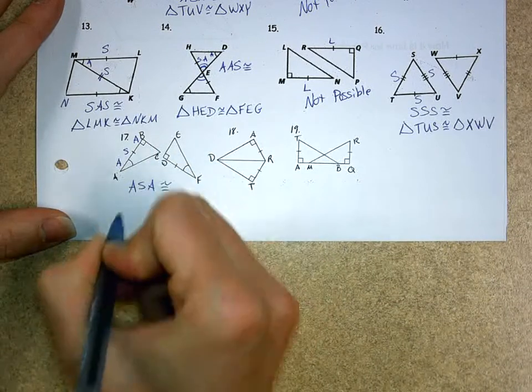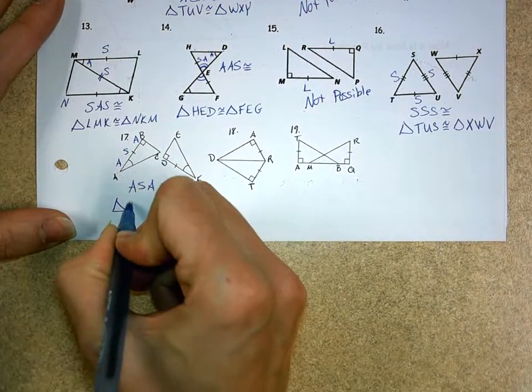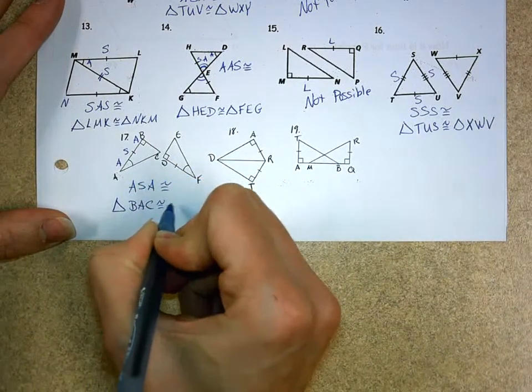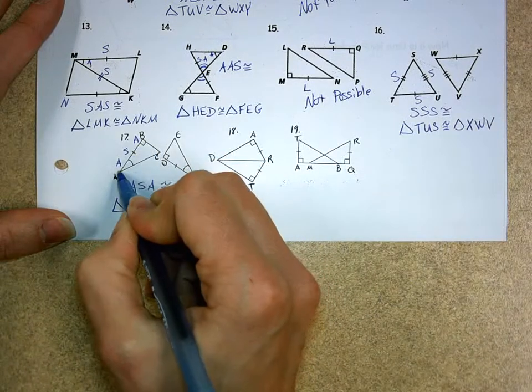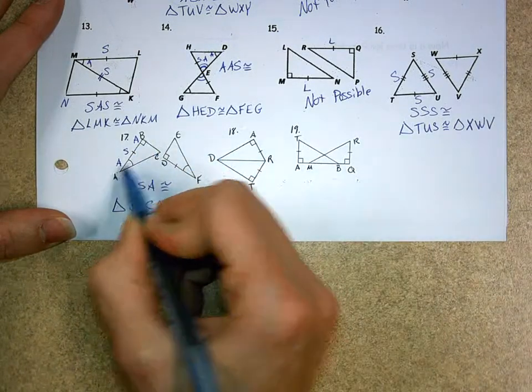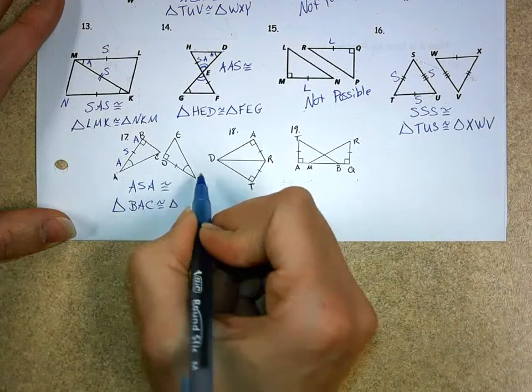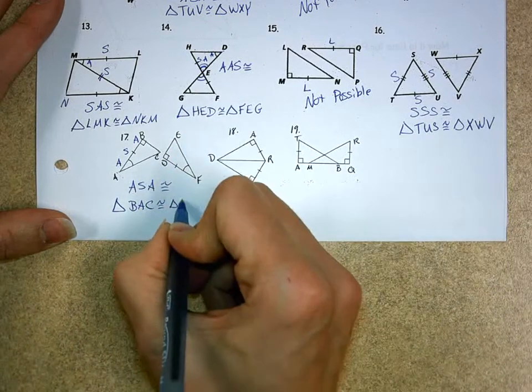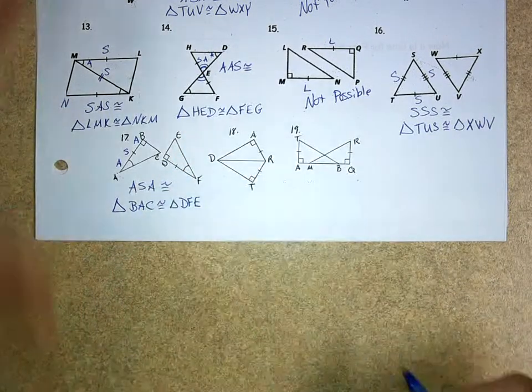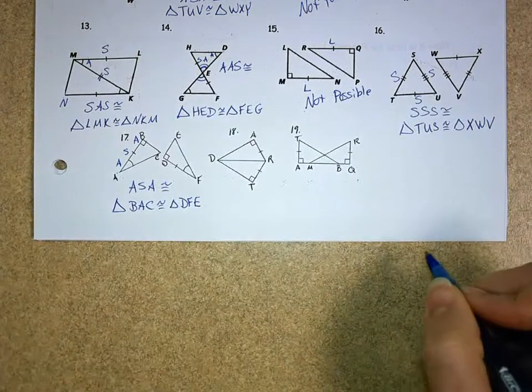So, that's the angle, side, angle congruence. My triangle BAC is congruent to triangle. If I go BAC, B to A to C, I'm going to go D to F to E. So, that one works out pretty well.